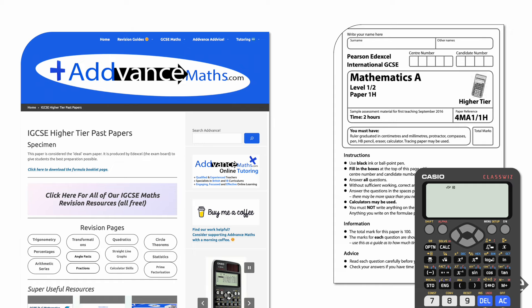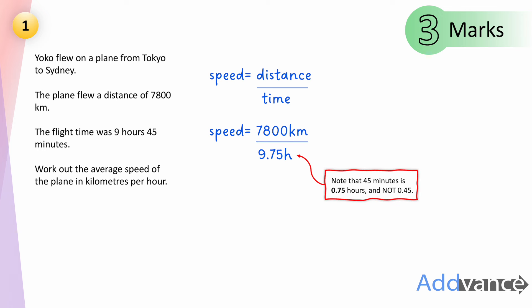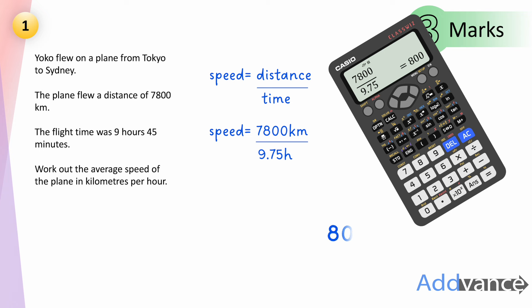Without further ado, let's start with question one. Yoriko flew on a plane from Tokyo to Sydney. The plane flew a distance of 7800 kilometres. The flight time was 9 hours 45 minutes. Work out the average speed in kilometres per hour. We use speed equals distance divided by time. 9 hours 45 minutes converts to 9.75 hours — 45 divided by 60 gives 0.75. So speed equals 7800 divided by 9.75, which equals 800 kilometres per hour.